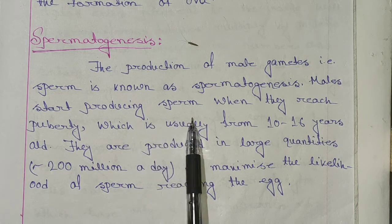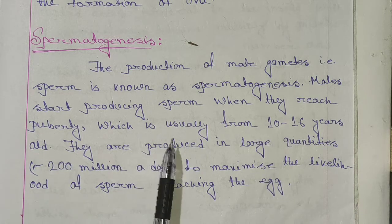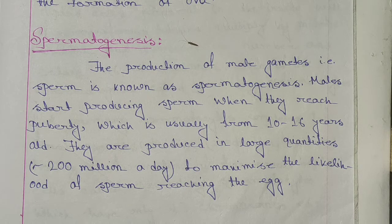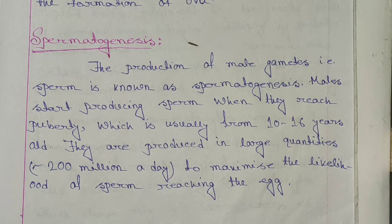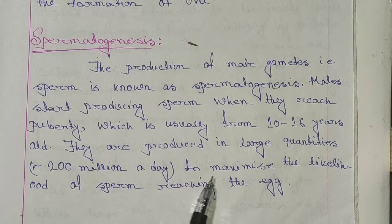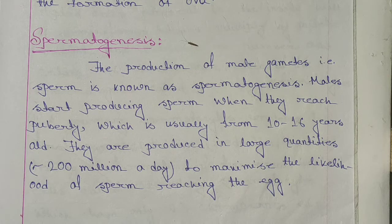Males start producing sperm when they reach puberty, which is usually from 10 to 16 years old. Puberty ke samay mein wu sperm produce hone ke liye capable hota hai. They are produced in large quantities, near about 200 million a day, to maximize the likelihood of sperm reaching the egg.